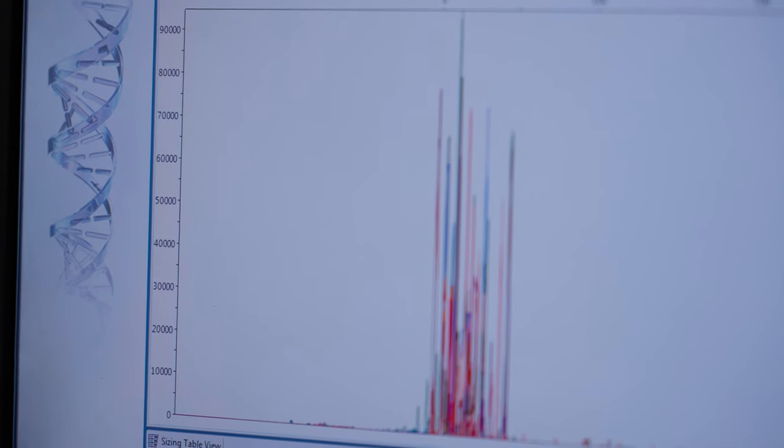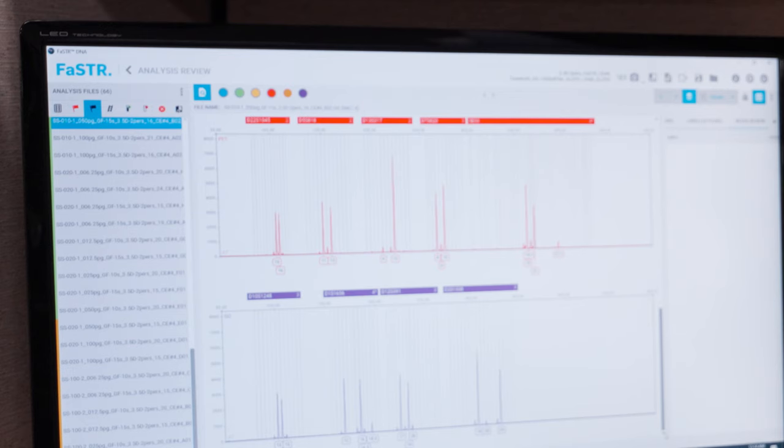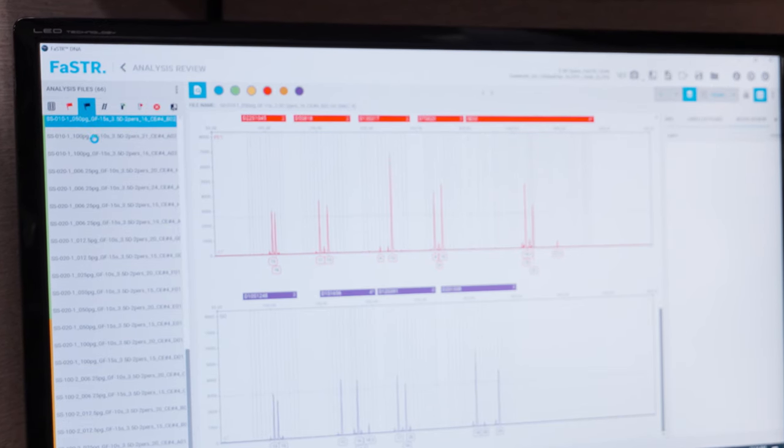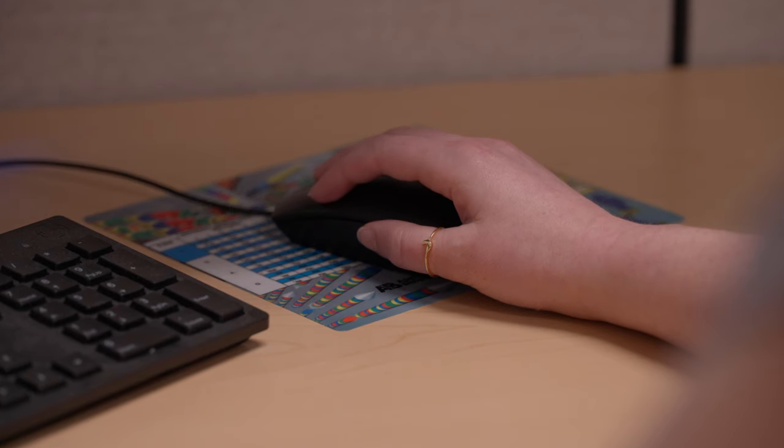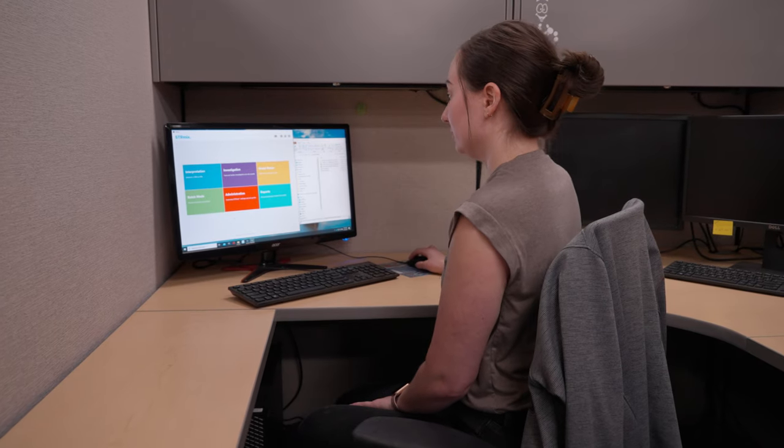Once the samples have finished processing on the CE instrument, the data is analyzed in a program called FASTER. This software takes the light emission data from the genetic analyzer and converts it into DNA data that the analyst can interpret.